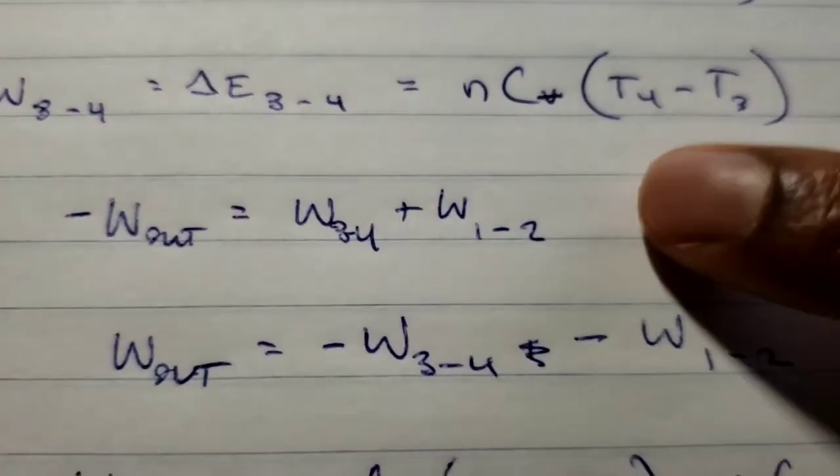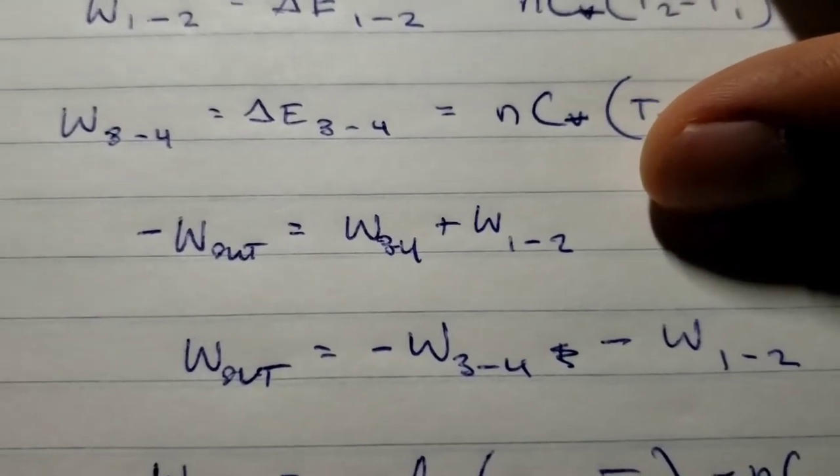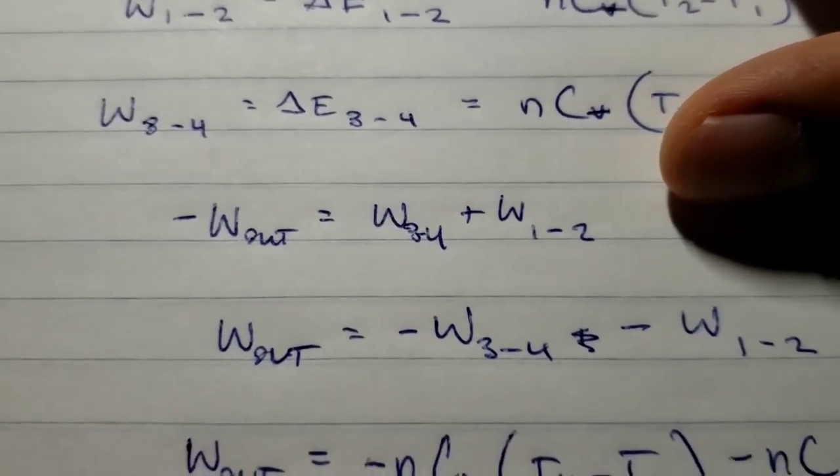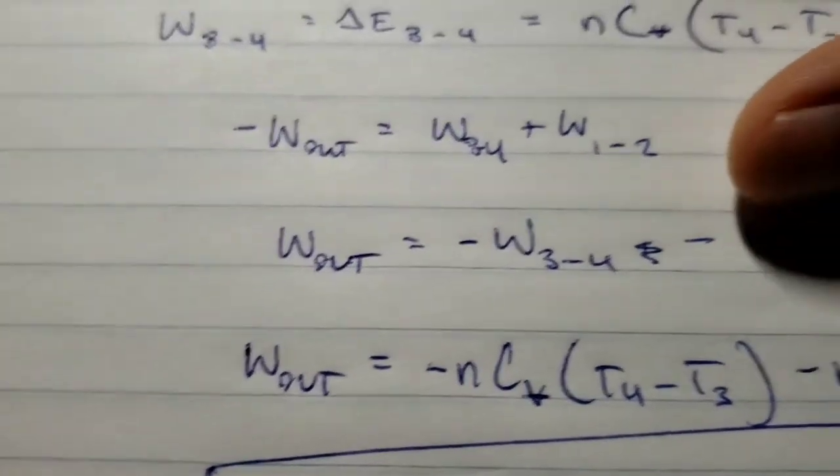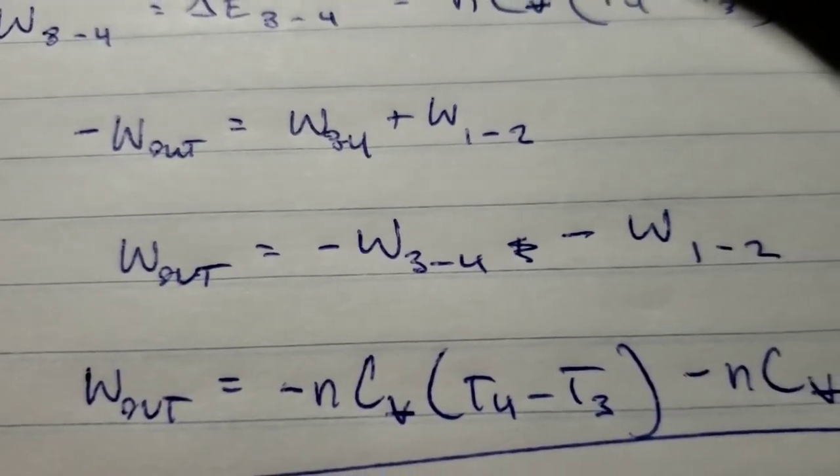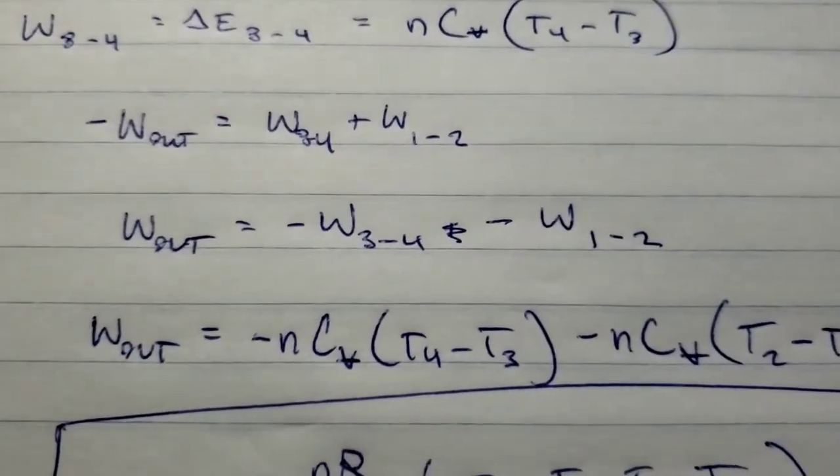Total work equals this, but you'll notice I put a negative sign here, and that's because this is actually the total work done on the system. But since we're concerned with this being a heat engine and the output, we're going to flip the sign. Positive work out equals negative work from 3 to 4 minus work from 1 to 2.